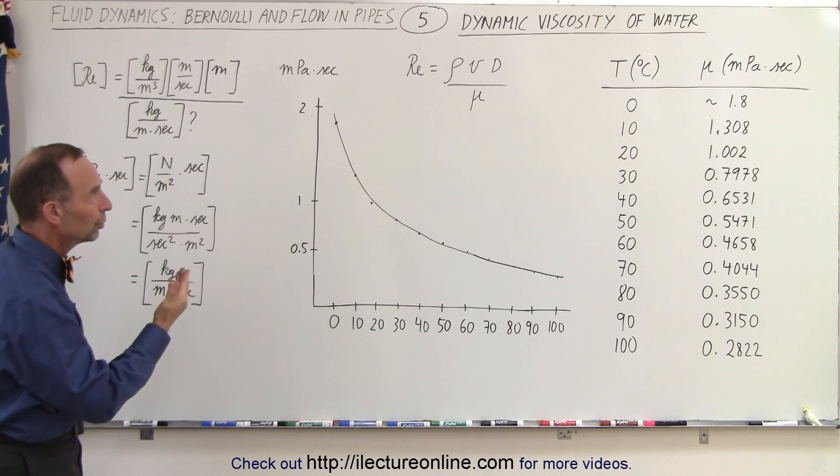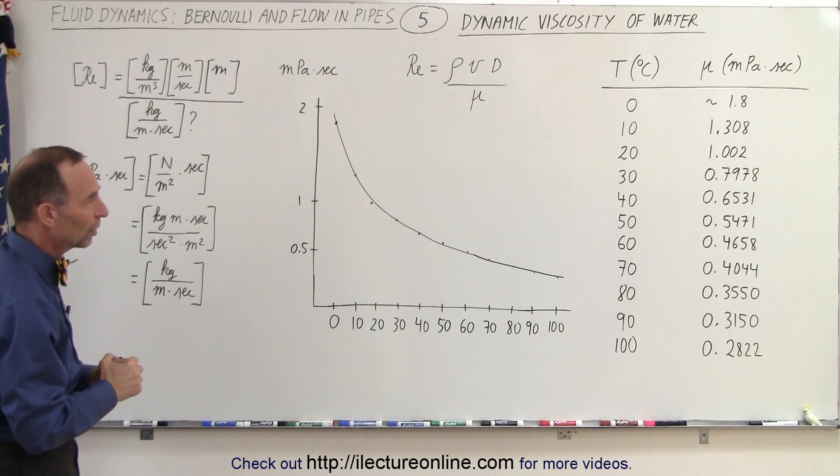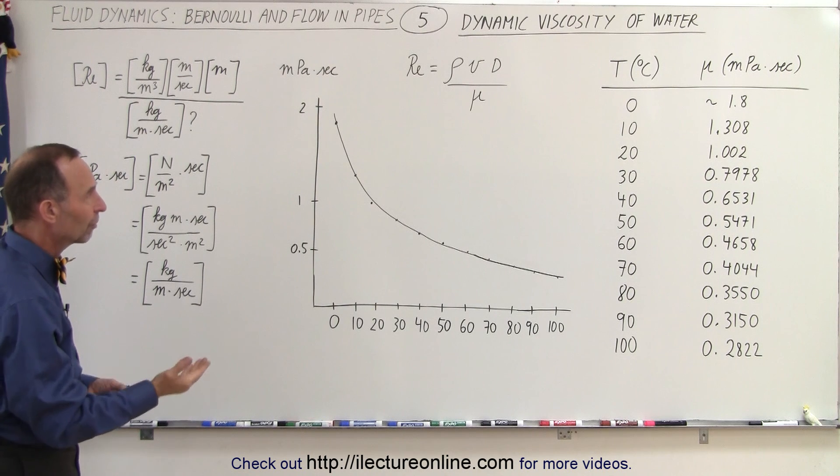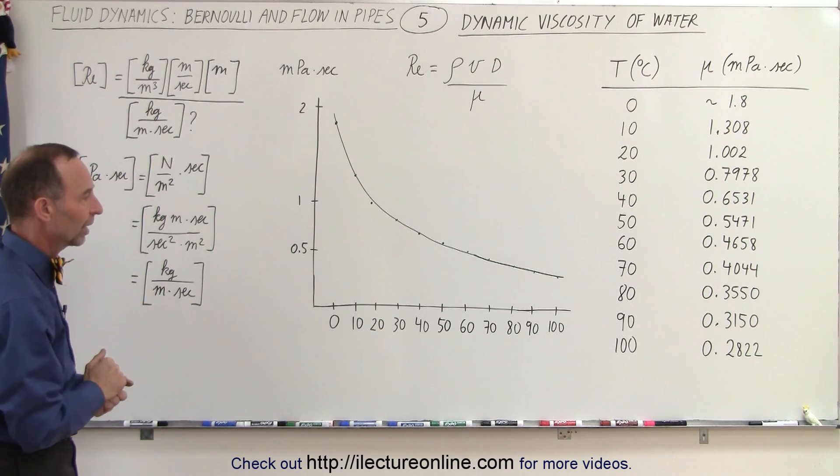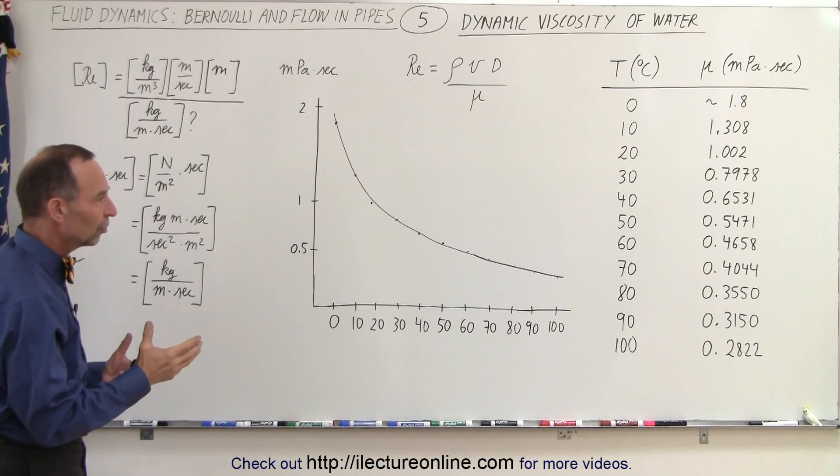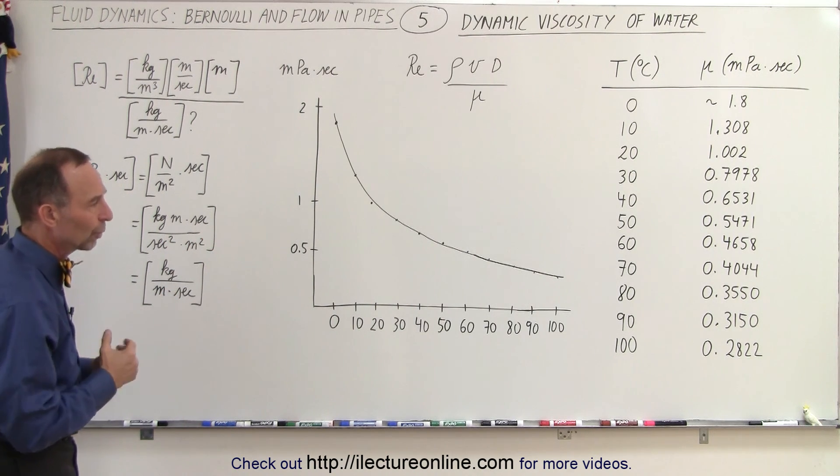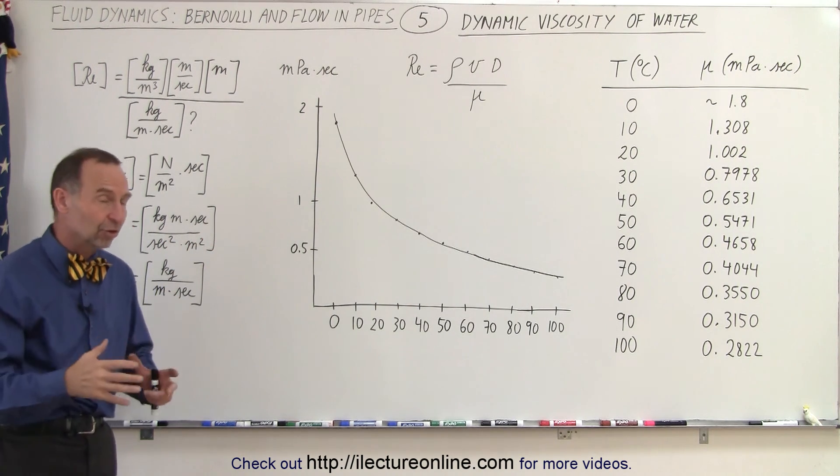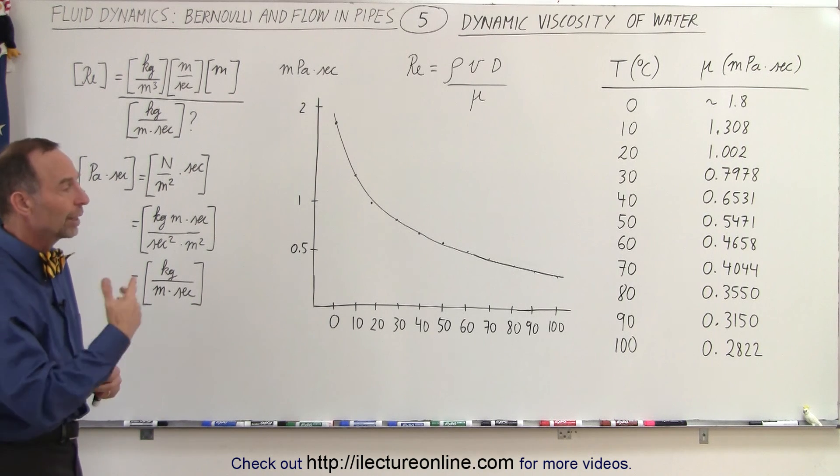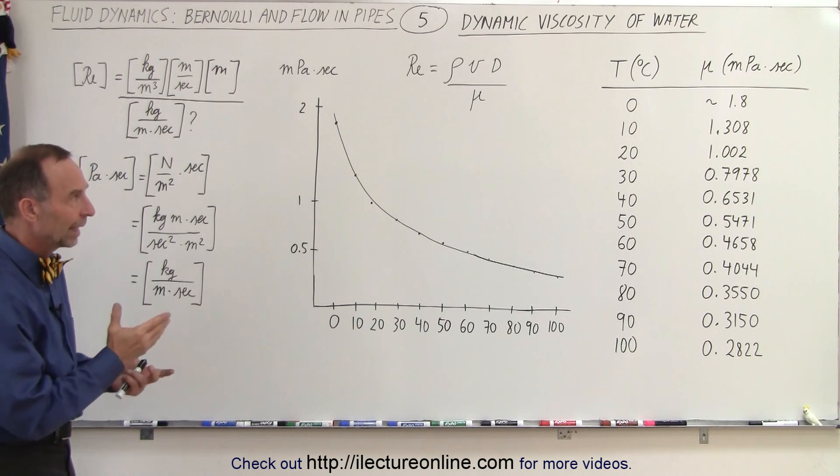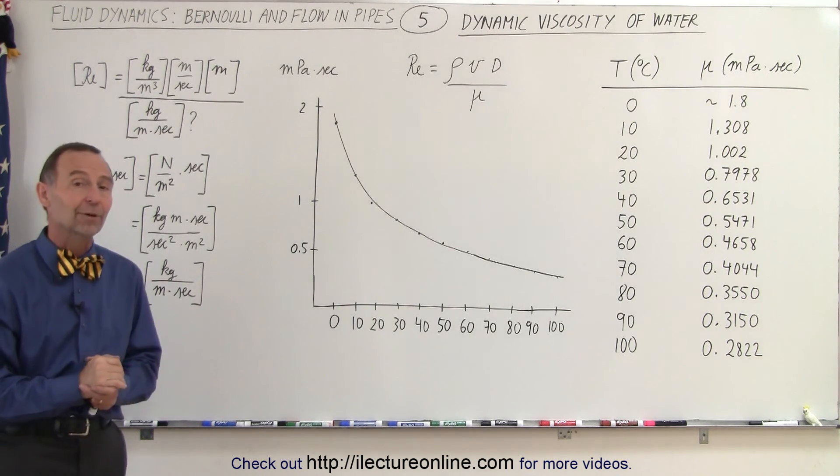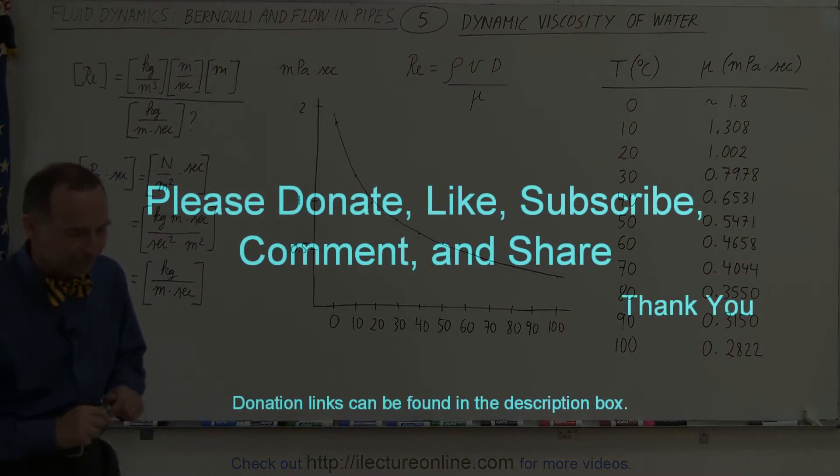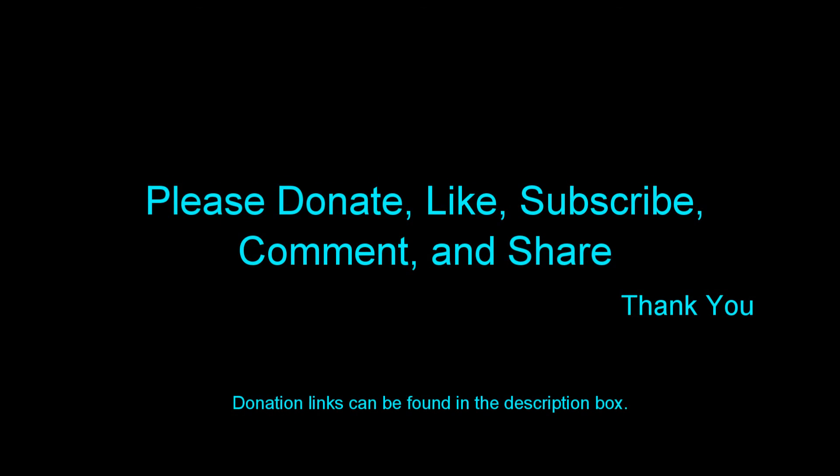So by definition, mu, the dynamic viscosity of the water, needs to have the units of kilograms per meter per second. And again, notice that with increasing temperatures, we have increasing opposition to flow and therefore a greater frictional loss. And that's what we mean by the dynamic viscosity of water.